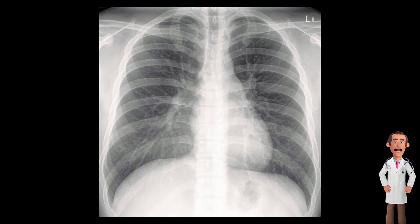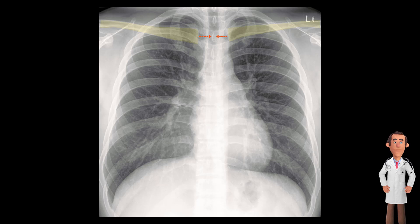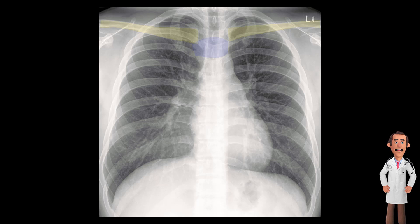Next, moving on to the bones, starting with the clavicles. Both clavicles should be equidistant. This is important to notice, as it determines the rotation of the film. You can also identify the manubrium between the clavicles.